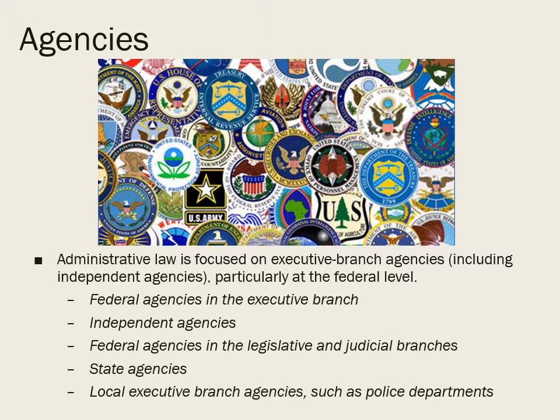Executive branch agencies tend to have one of three functions. First, social welfare agencies are tasked with promoting the general public health and welfare by providing direct services and benefits to members of the public — the Centers for Disease Control and the Department of Veterans Affairs are two examples. Second, regulatory and investigatory agencies promote or prohibit certain behaviors, including business practices, enforcing the law through permitting and prosecution — examples include the FCC, OSHA, the EPA, and the FBI. Third, public service agencies like the National Institutes of Health and the National Science Foundation provide specialized services, usually related to research for the public good.